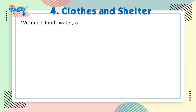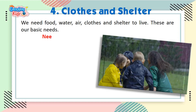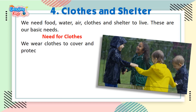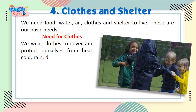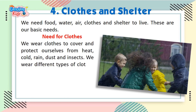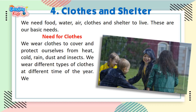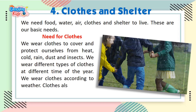We need food, water, air, clothes, and shelter to live. These are our basic needs. We wear clothes to cover and protect ourselves from heat, cold, rain, dust, and insects. We wear different types of clothes at different times of the year, according to the weather. Clothes also make us look smart.